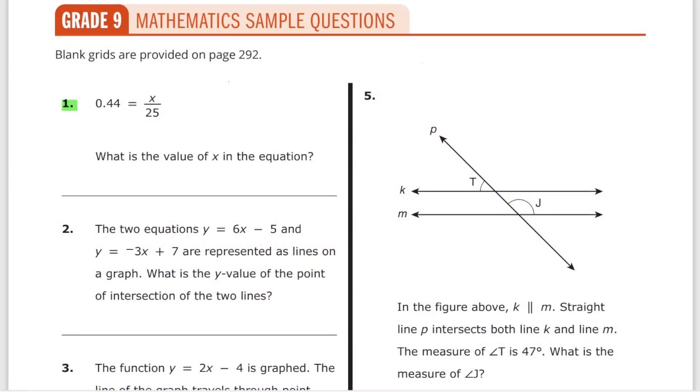The first question is 0.44 equals x over 25. What is the value of x? How would you solve it? x equals 0.44 multiplied by 25. And that's where you can find the first trick.